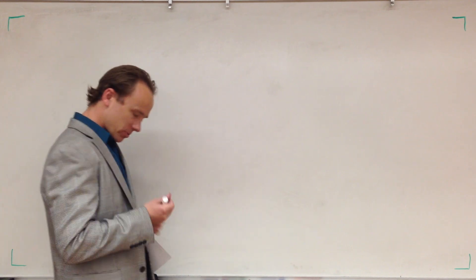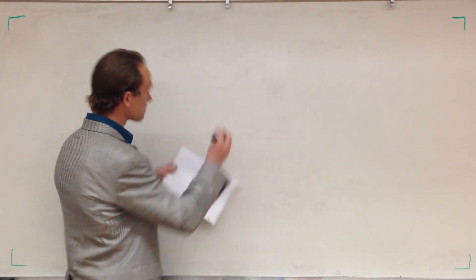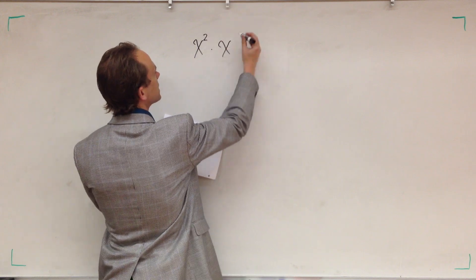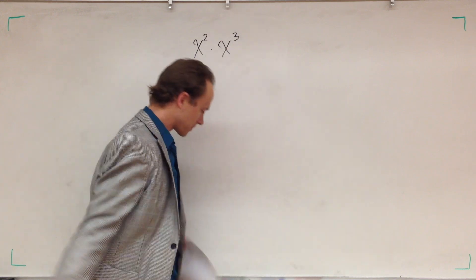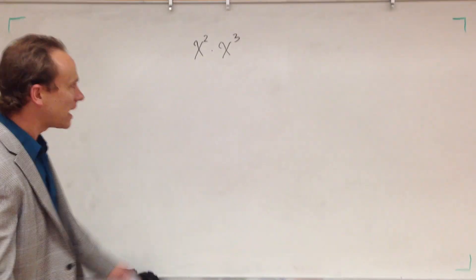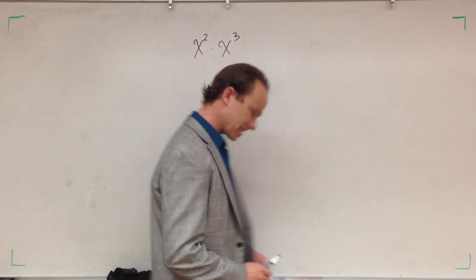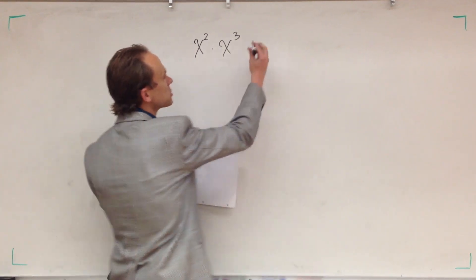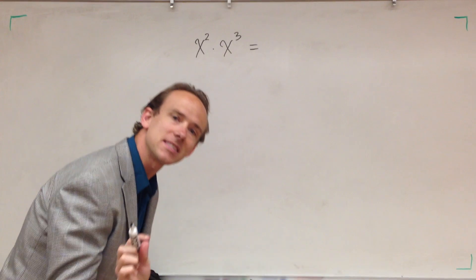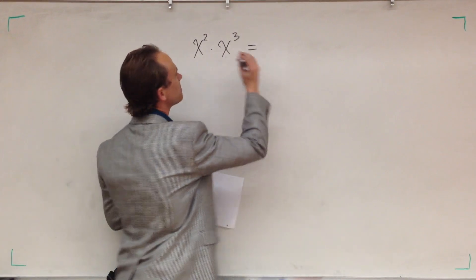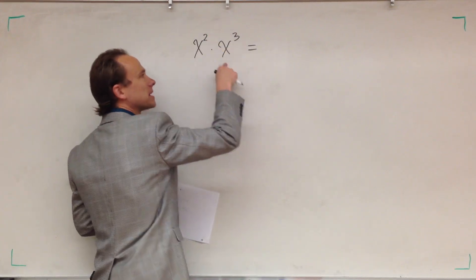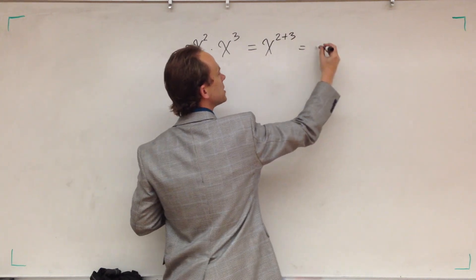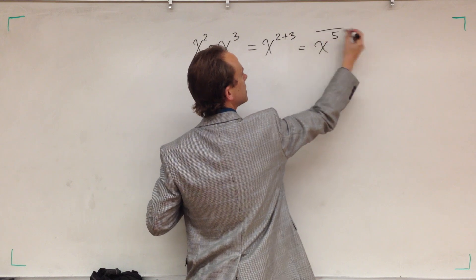We want to deal with this situation right here. Let me write it up on the board. We've got x squared multiplied by x to the third. We're going to have a rule for this, and it's going to be a very important rule — this rule is beautiful and it deserves your attention. Watch: x squared times x to the third is x to the two plus three, which is equal to x to the fifth.